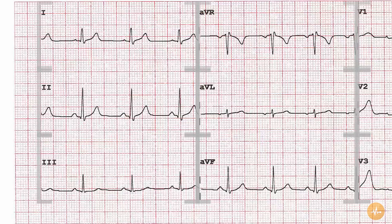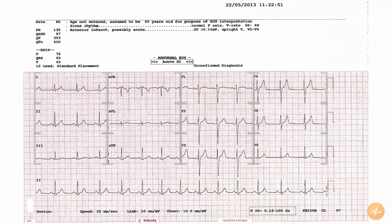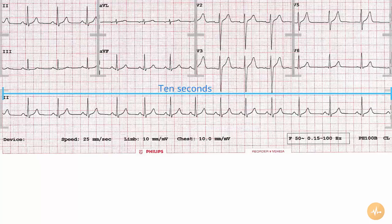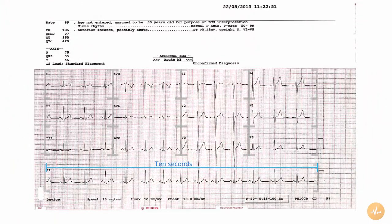Each of the individual leads of the ECG are recorded and displayed for only one quarter of the 10-second duration of the ECG, i.e. 2.5 seconds. It's therefore conventional to display a longer 10-second recording from one of the leads at the bottom of the ECG. This usually comes from lead 2 and is known as the rhythm strip. We use this to look at abnormalities of rhythm. As you can see from this rhythm strip, the patient's heart beat 13 times during the 10 seconds that this ECG took to record.